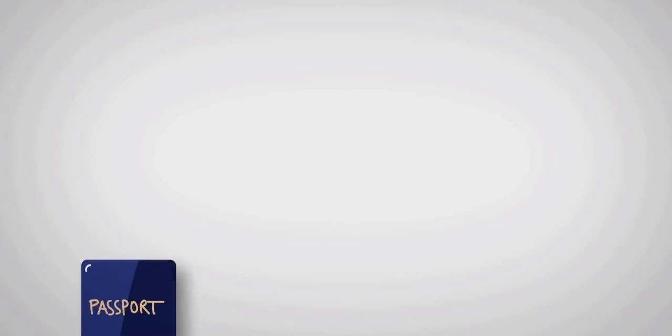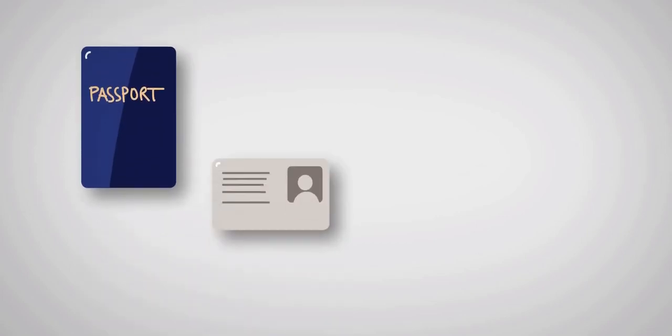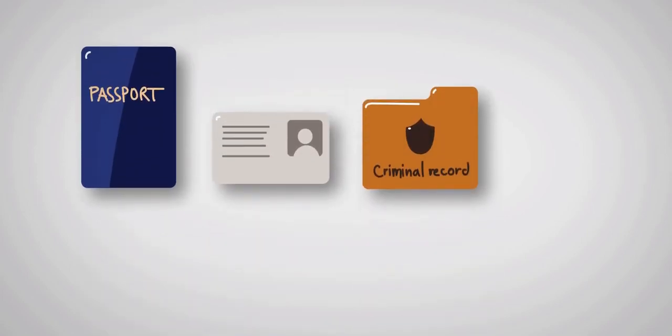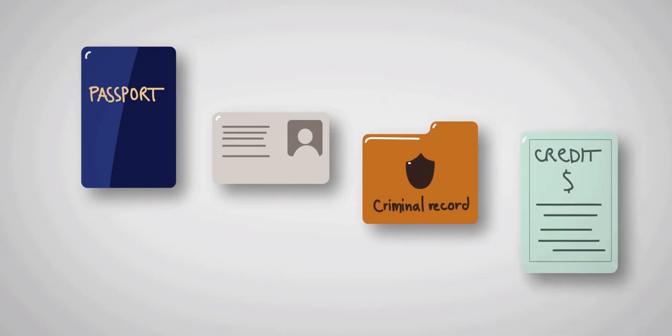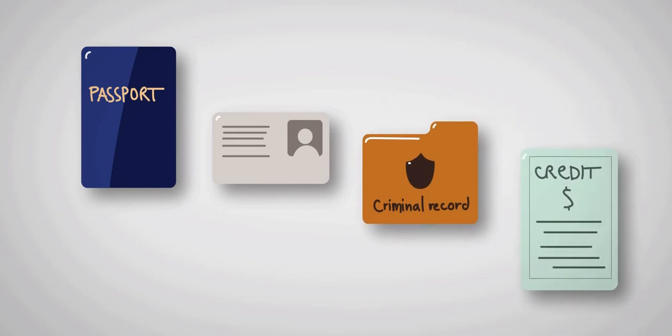There are other ways to address insider threats, such as pre-employment screening and background checks. A simple but valuable control is to confirm a new worker's true identity with their passport, government-issued photo ID, or similar.